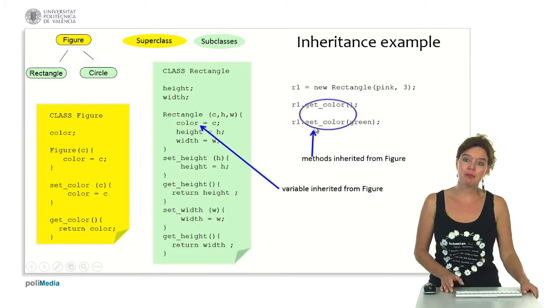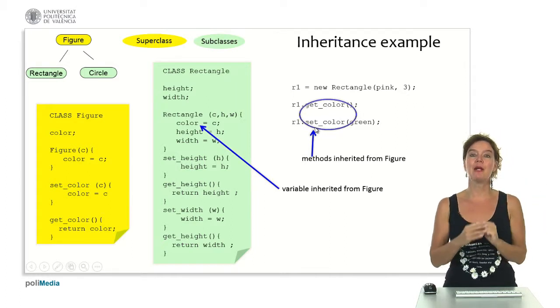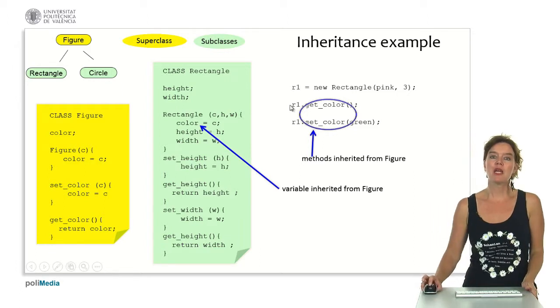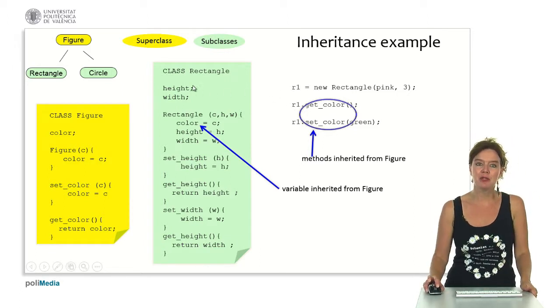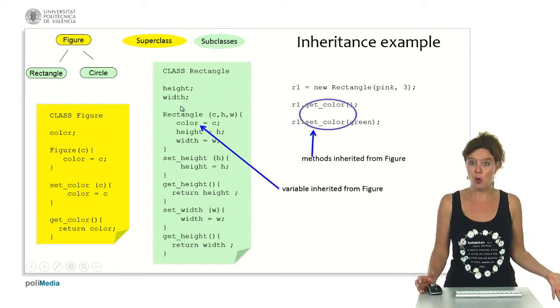So as another example, rectangles. So we keep the same class figure with the color and we say rectangle is a subclass of figure. So now we need to define attributes that are specific to a rectangle. Well rectangles don't have radius.